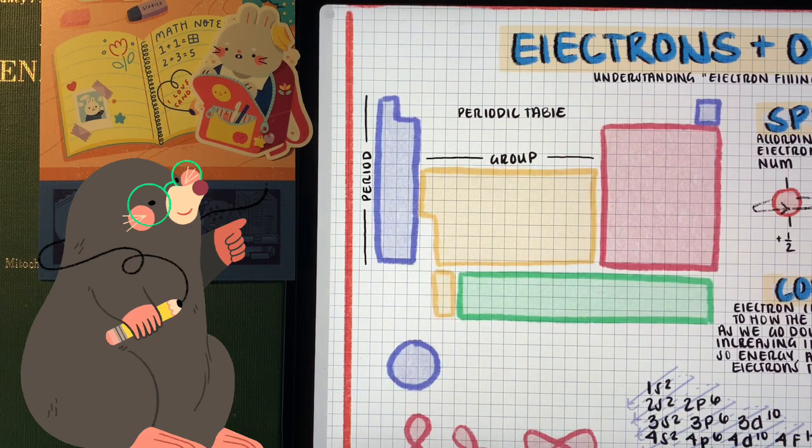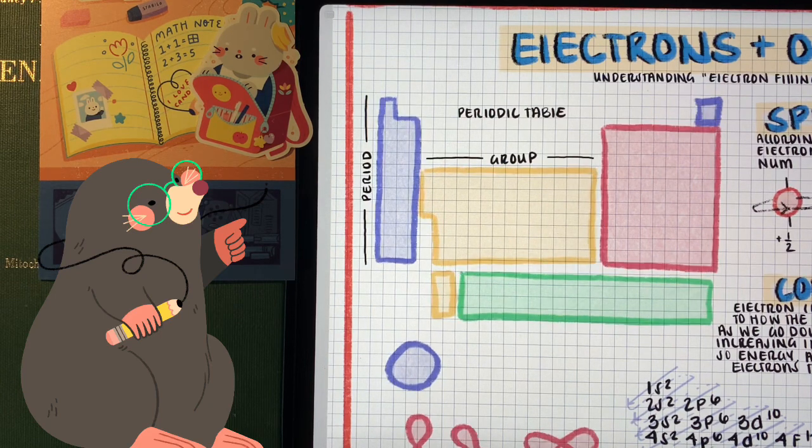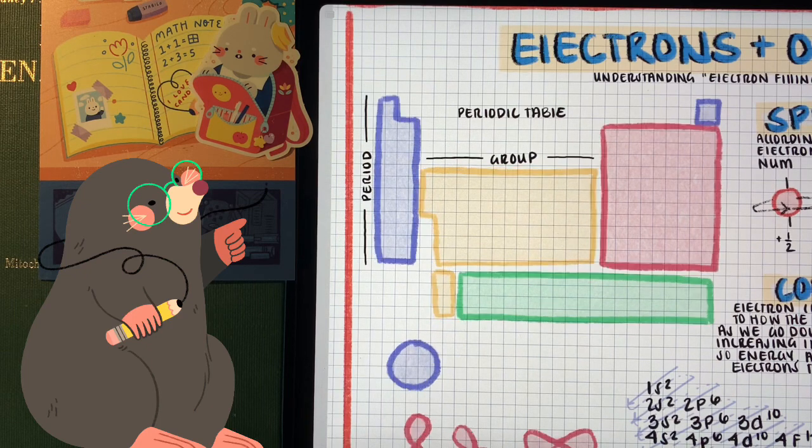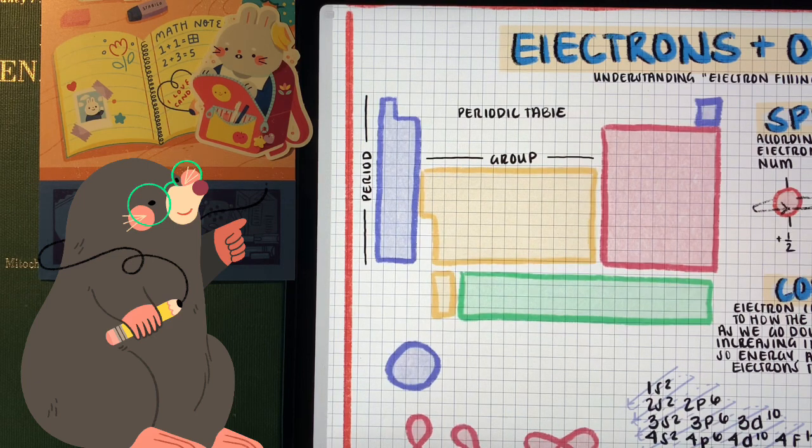The periodic table is ordered in atomic numbers, and that isn't just some arbitrary number we came up with. The atomic number represents the number of protons an atom has. The number of protons an atom has gives it its property.